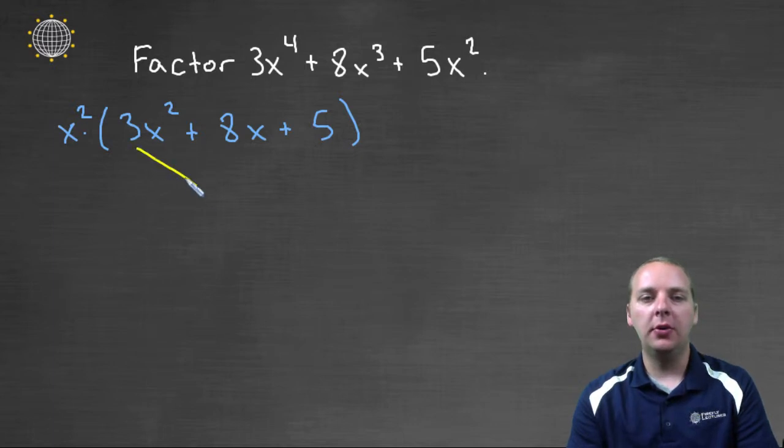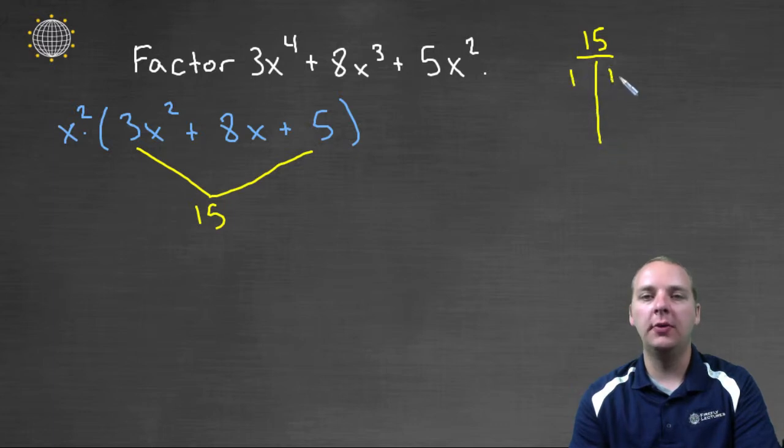So here what we're going to do is we're going to take the 3 and the 5, and we're going to multiply those guys to get 15. And then I'm going to look for the different factors of 15, and there's a few of them, 1 and 15, and 3 and 5.